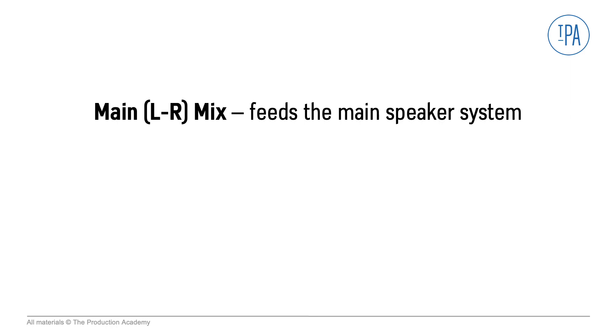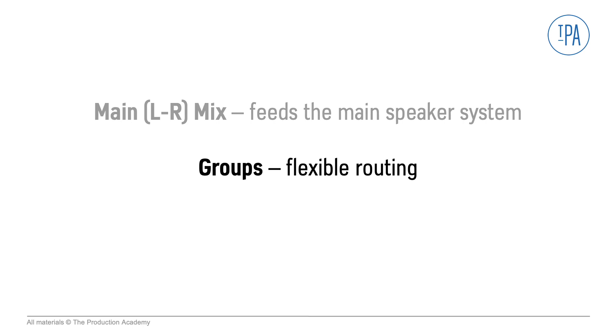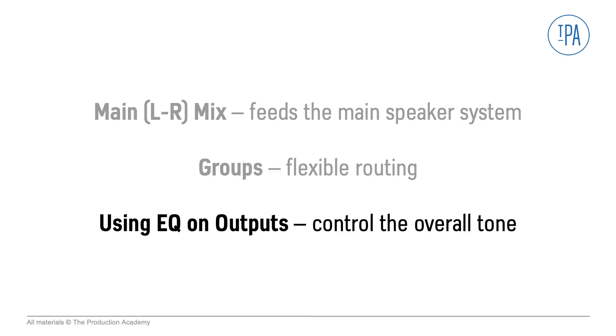Just like we use aux sends to feed monitors and effects, we use both groups and the main left-right mix — also called the mains or the master bus — to feed the main speaker system. First in this video we look at the main left-right mix which feeds the main speaker system, then we talk about groups which have flexible routing, and we discuss how using EQ on your outputs gives you control of the overall tone of your mix.